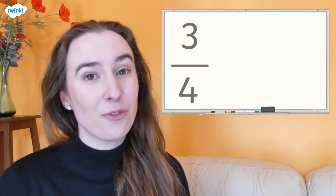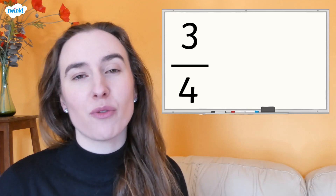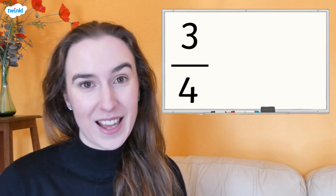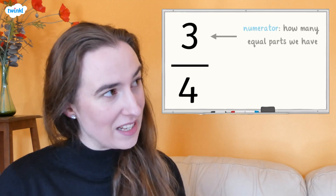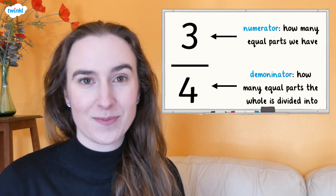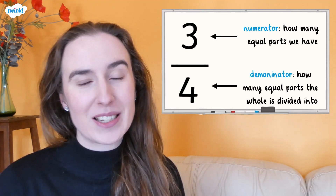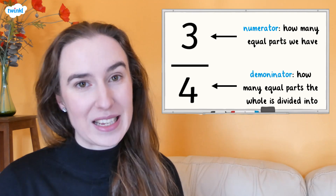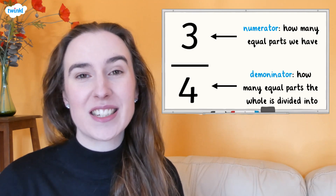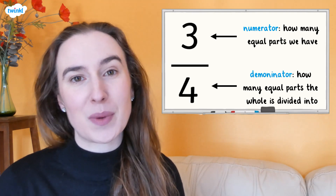A fraction is a number that represents part of a whole. A fraction has a numerator and a denominator. The denominator tells us how many equal parts the whole is divided into, and the numerator tells us how many of those parts we have.